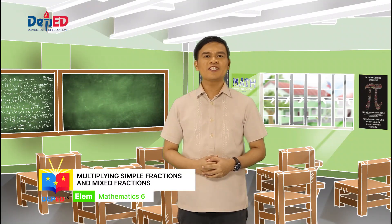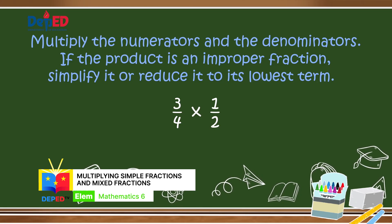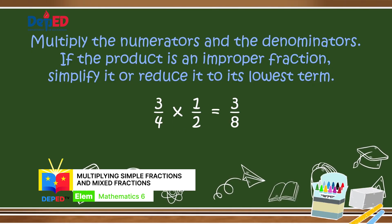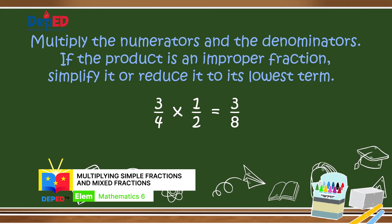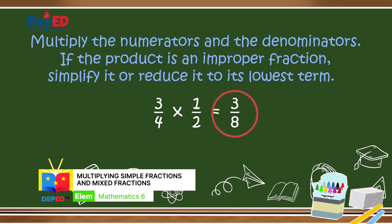Multiplying fractions are just like multiplying numbers. To multiply fractions, you have to multiply the numerators and the denominators. If the product is an improper fraction, simplify or reduce it to its lowest term. For example, 3 fourths times 1 half: multiply the numerators, 3 times 1 equals 3; multiply the denominators, 4 times 2 equals 8. So we have 3 eighths. Is it already the lowest term? Yes! 3 eighths is the final answer.